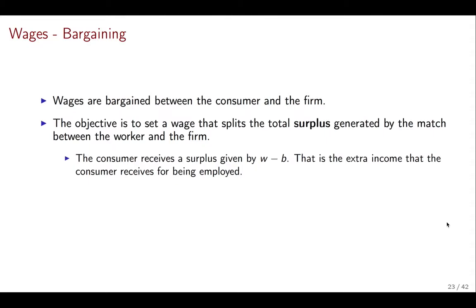Well, the consumer receives some surplus from finding the job. Basically, the consumer is going to get the wage, but that's not the total value because the consumer, even without the job, had a certain income B. Even if the consumer doesn't find the job, if the consumer walks away from the job, they can still get their unemployment income B. Because of that, the surplus of the consumer is W minus B. It's only the extra income that the consumer gets for being employed. This is important. It's not the total income. It's just the extra income.